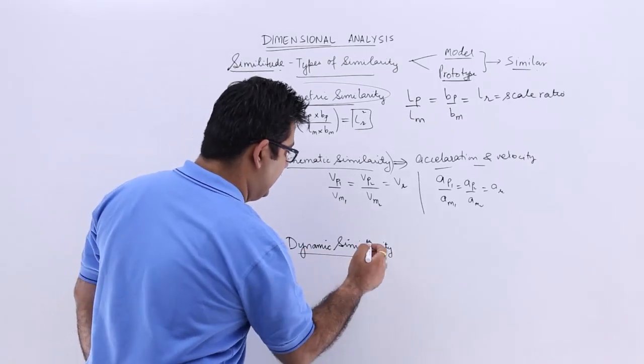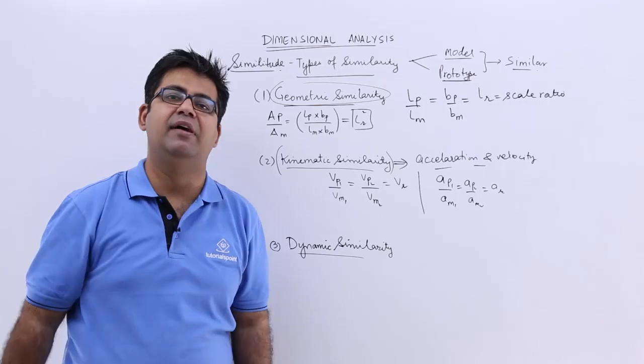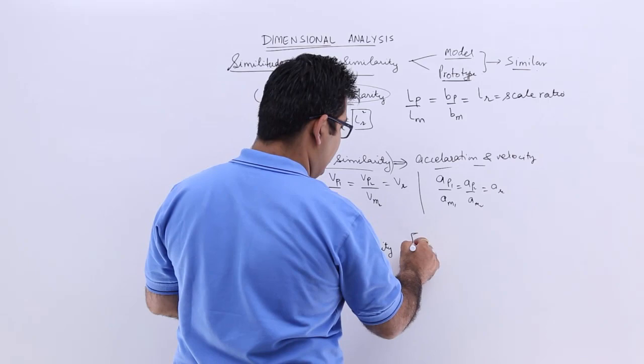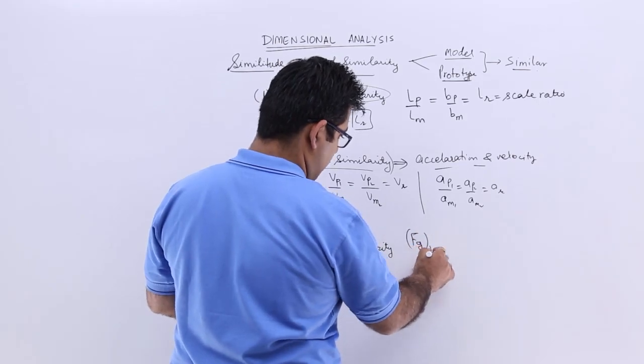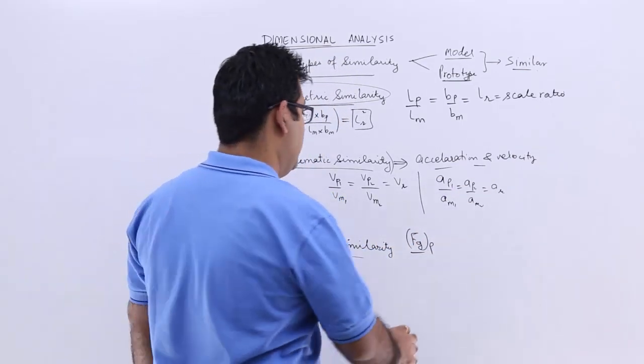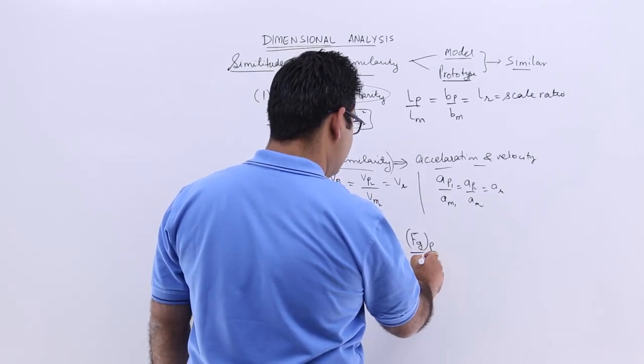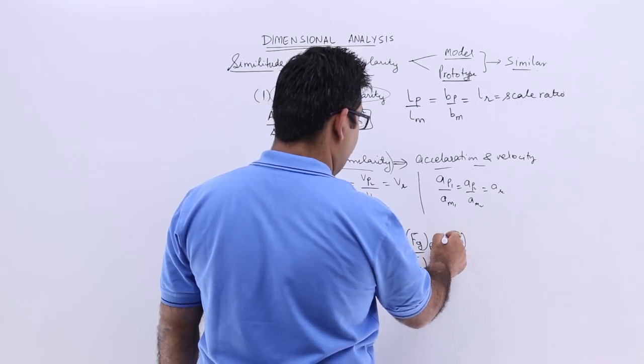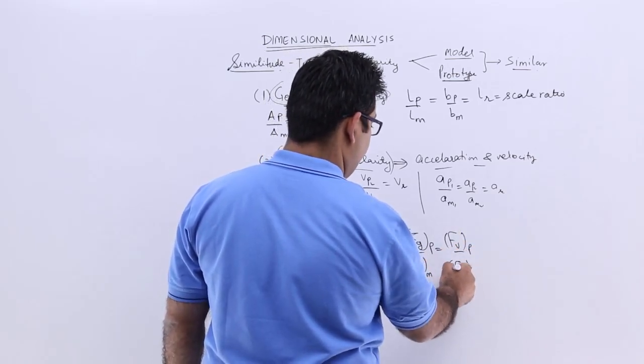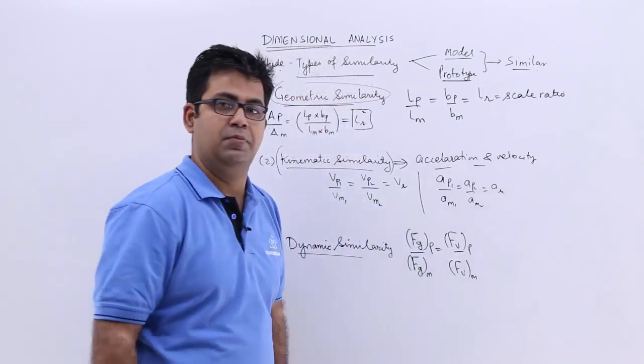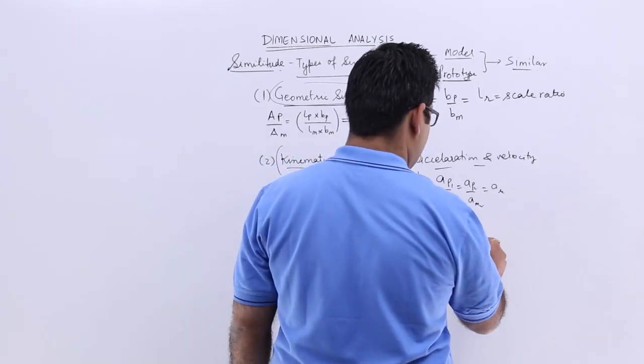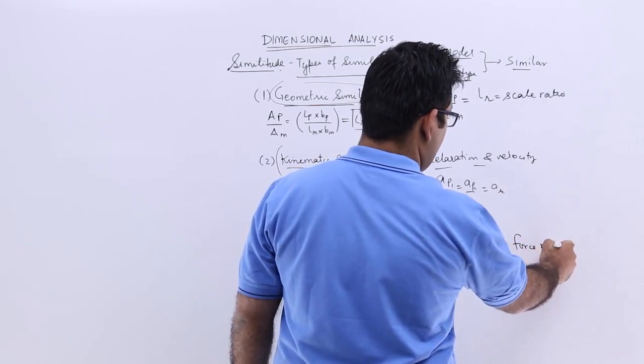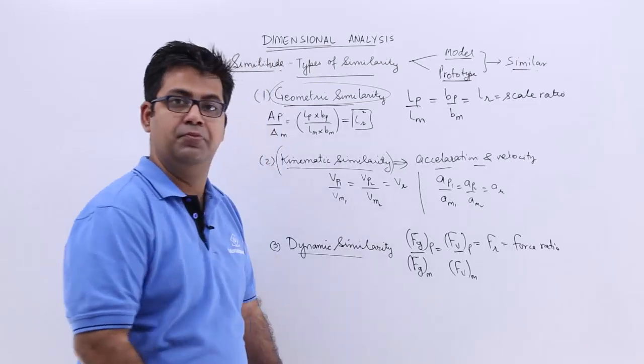The last one is the dynamic similarity. Let's say you have some fluid motion in place, so in dynamic similarity, the forces on a proto have to be in the same ratio as to the model. So you will have FV, the viscous force on a proto, upon viscous force on a model. So these force ratios would be same, and they can be written as FR, which is nothing but the force ratio.